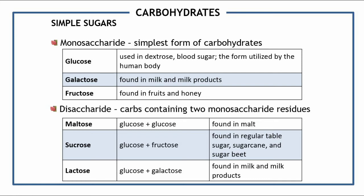Another type of simple sugar is the disaccharide. It is a carbohydrate containing two monosaccharide residues — in other words, a disaccharide is simply a combination of monosaccharides. The first example of a disaccharide is maltose, which is a combination of glucose and glucose. It can be found in malt, which is a dried cereal grain.